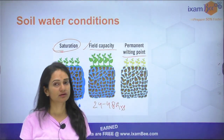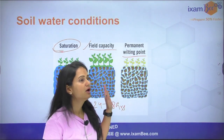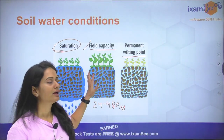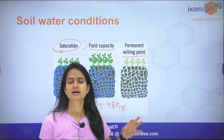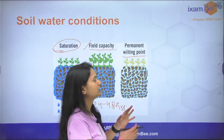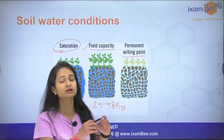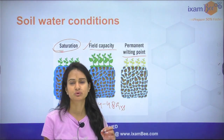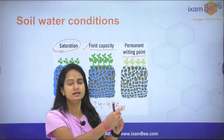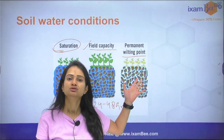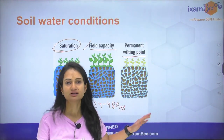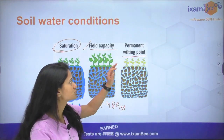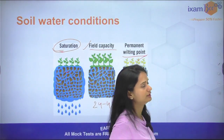The next condition is the permanent wilting point. When we don't have any irrigation or water supply, the water present seems to be depleted. When the water is depleted and evaporation continues without any irrigation supply, the crops and plants will wilt, dry out, and finally die. That condition is called the permanent wilting point.